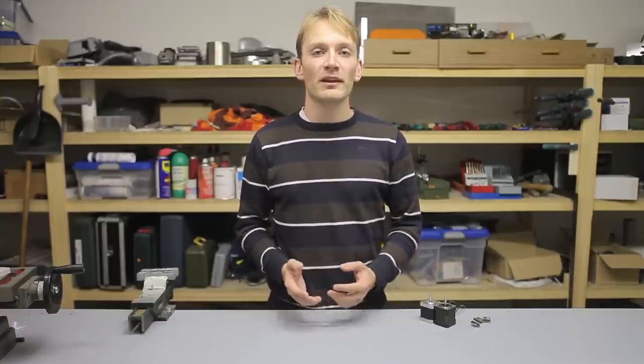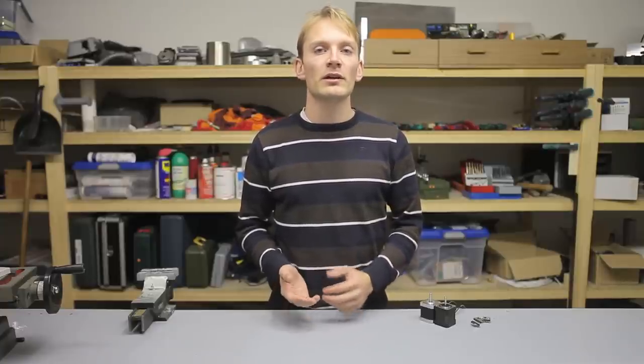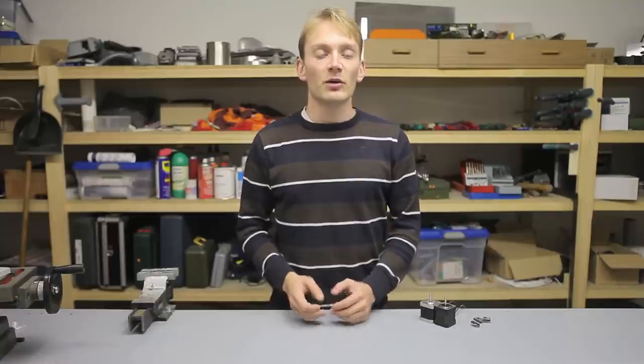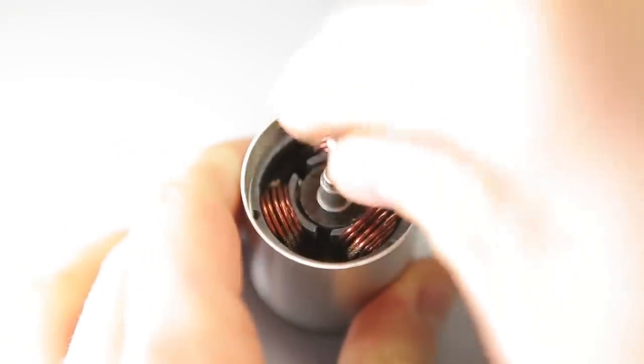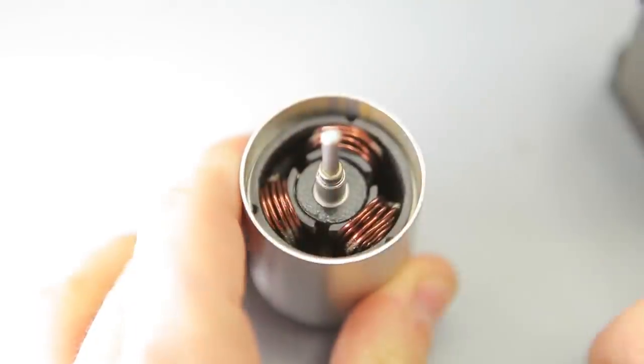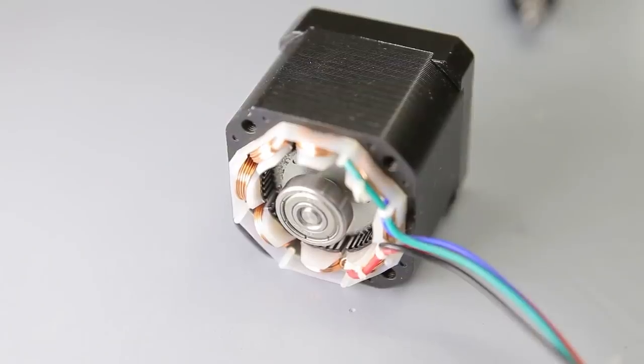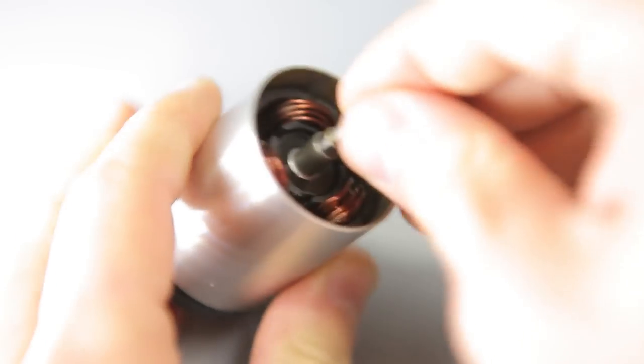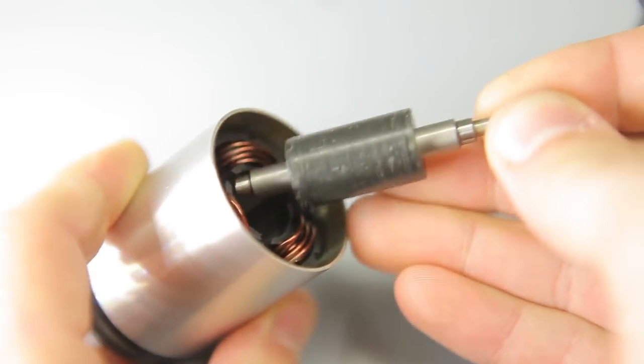If these motors only used permanent magnets, they would be stuck in a single position and if you tried to rotate them, they would generate opposing torque to return to that position. Now because one half of the magnets in actual motors are electromagnets, we can control which ones attract and which ones repulse the magnets on the rotor.